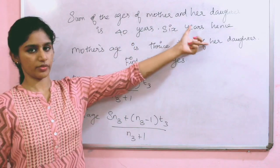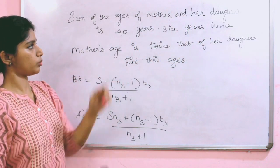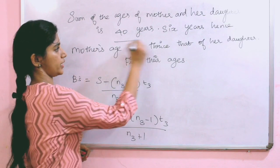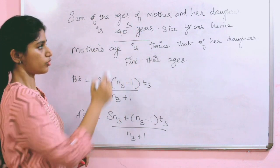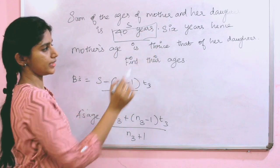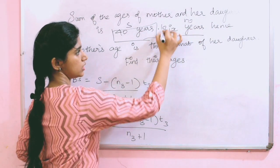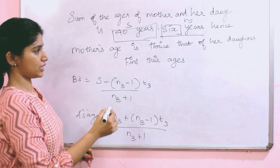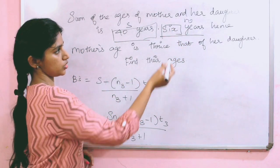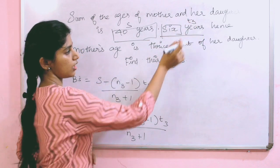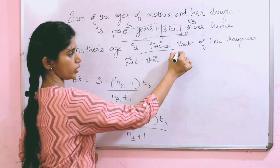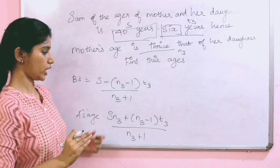The sum of the ages of mother and daughter is 40 years. So S is 40 years. 6 years hence, T3 is 6. Mother's age is thrice that of daughter. N3 will be 3.